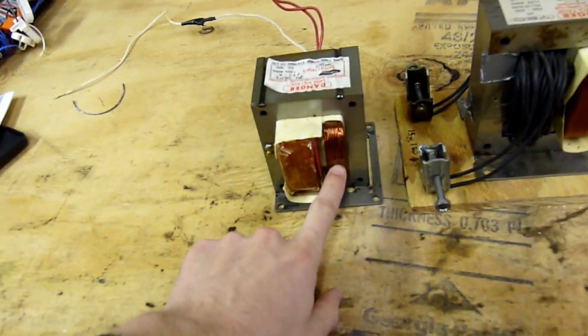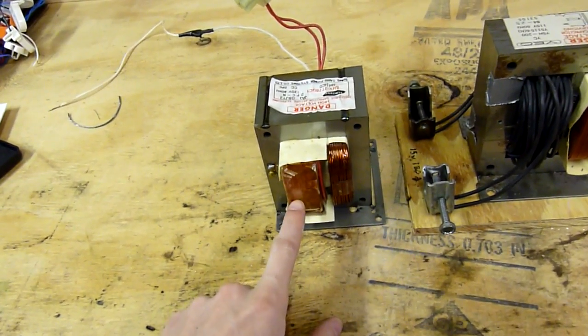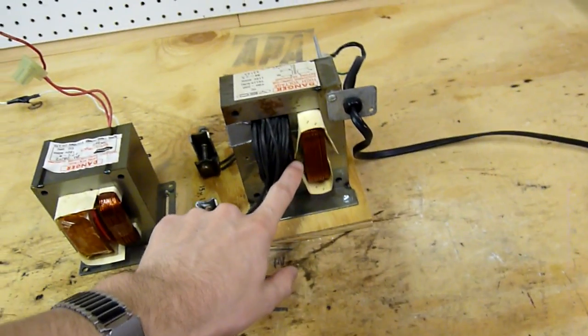As you notice, this is a step up transformer, stepping up the 120 volts or so of the outlet up to 2,000 volts, and this one has been rewound.